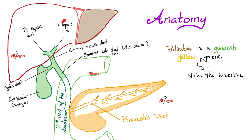Quick review of the anatomy. Here we have the liver, two anatomical lobes, and then you have right hepatic duct and left hepatic duct. They join together to give the common bile duct. The common bile duct joins the cystic duct of the gallbladder, and together they make the CBD — the common bile duct — which then joins the main pancreatic duct and opens together in the posteromedial aspect of the second part of the duodenum.